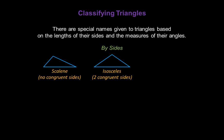This particular triangle is called isosceles. It has two congruent sides, or two sides that have the same measure. This triangle is an equilateral triangle. All of the sides are congruent and measure exactly the same length.